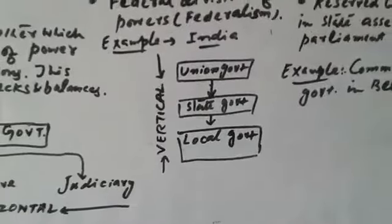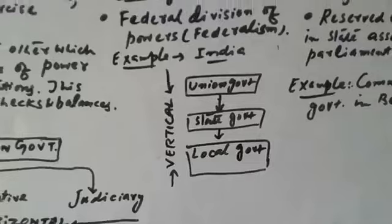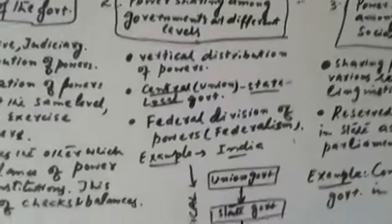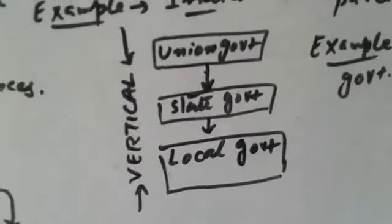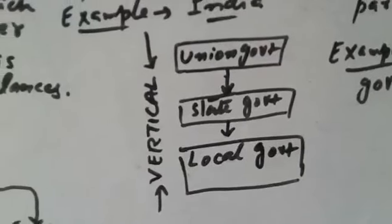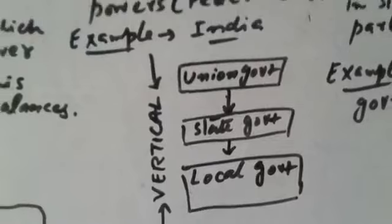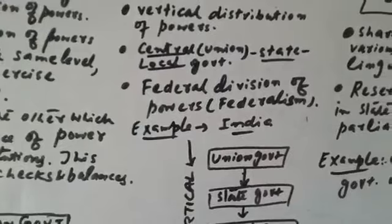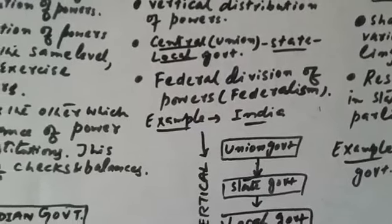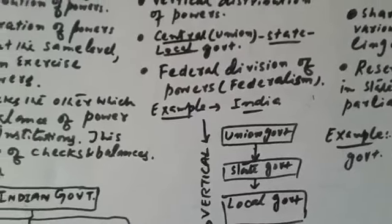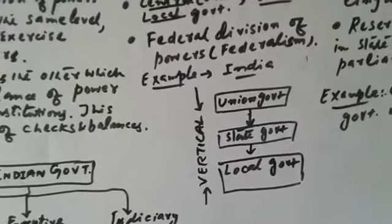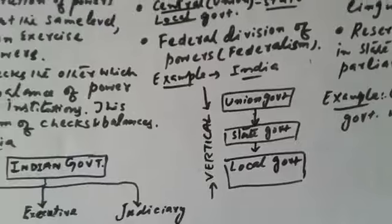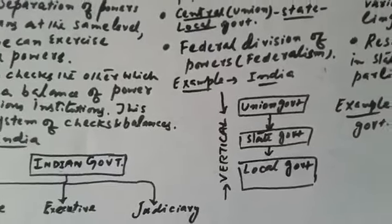Now, power sharing among different levels. In India, we have three levels: union government, state government, and local government. When power is distributed vertically across these levels, we call it the federal division of powers. Federalism is simply the distribution of powers at different levels. There is decentralization of powers across these three levels.